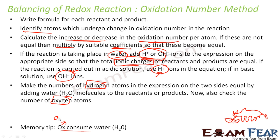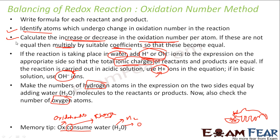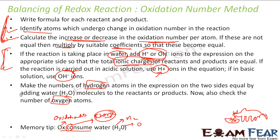Ox consume water is the memory tip. OX stands for balancing of oxidation number. C stands for balancing of charge. Water is H₂O, so balance hydrogen and balance oxygen. The first step is to balance oxidation number — to do that, you write the reaction and find the oxidation numbers. Then balance oxidation number. Then you balance charge by adding H⁺ or OH⁻ depending on the medium. Then we talk about water: balance hydrogen and oxygen. Oxygen should balance on its own as the last step — we just need to validate it.